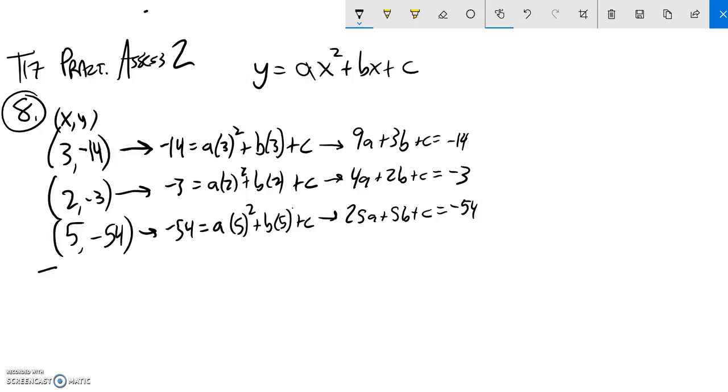So let me write this as a matrix, and then I can plug away at it. So 9, 3, 1, negative 14. 4, 2, 1, negative 3.